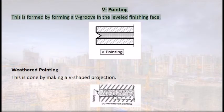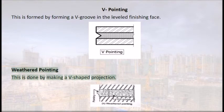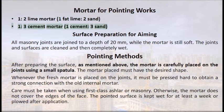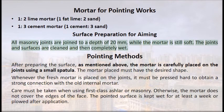V-pointing is formed by making a V-groove in the levelled finishing face. Weathered pointing is done by making a V-shaped projection. Mortar for pointing works: 1:2 lime mortar (1 fat lime, 2 sand) and 1:3 cement mortar (1 cement, 3 sand). Surface preparation for pointing: all masonry joints are raked to a depth of 20 mm while the mortar is still soft, and the joints and surfaces are cleaned and completely wet.